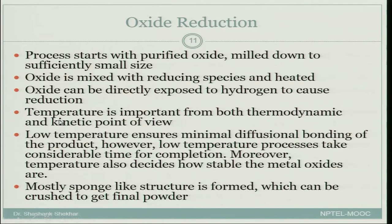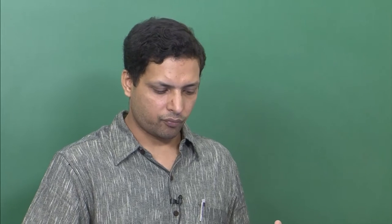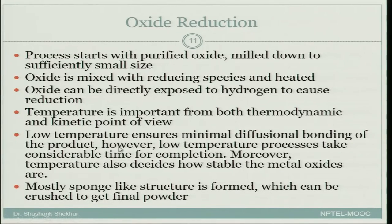Above a certain temperature, oxides are stable; at lower temperatures, the pure element is stable. However, kinetics are higher at higher temperatures. You must find an optimum temperature where the reduced species is stable and kinetics is high enough. Low temperature ensures minimal diffusional bonding of the product, but takes considerable time for completion. Mostly a sponge-like structure is formed which can be crushed to get the final powder.